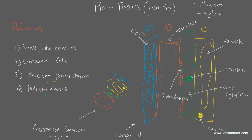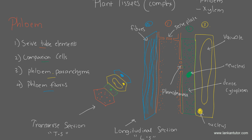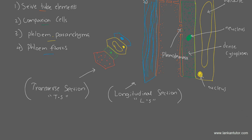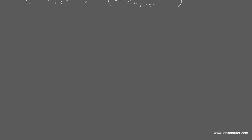Finally, phloem fibers — we know what a fiber is. In the previous episode we discussed sclerenchyma: lignified dead cells used for supportive functions. It is the same here. They are not called phloem sclerenchyma because there are two types of sclerenchyma: stone cells and well fibers. We will now move on to the next complex plant tissue.